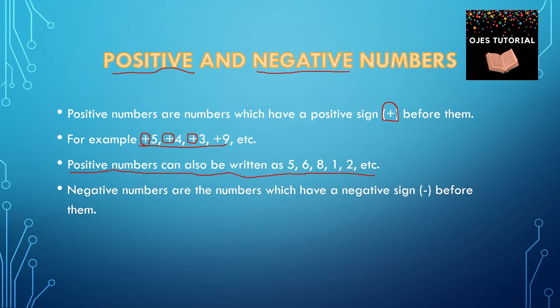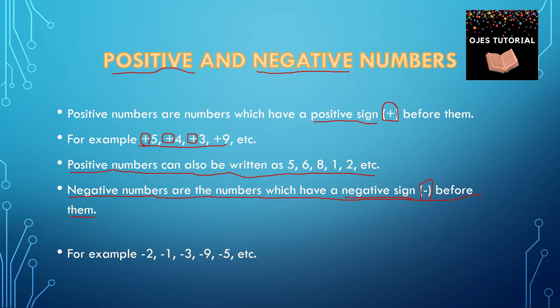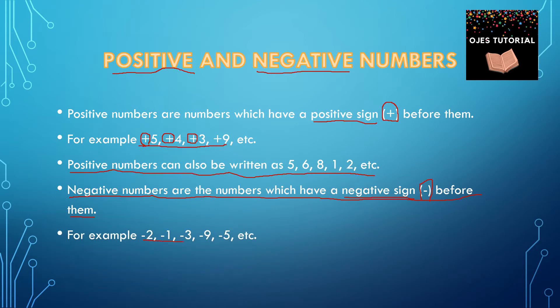Now, negative numbers. Negative numbers are the numbers which have a negative sign before them — that is, minus. So the positive sign is plus and the negative sign is minus. For example, minus 2, minus 1, minus 3, minus 9, minus 5, etc.